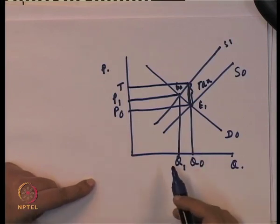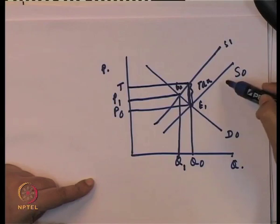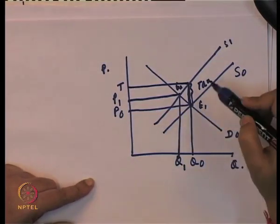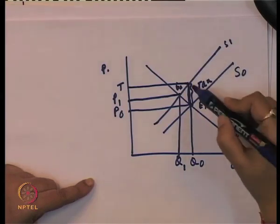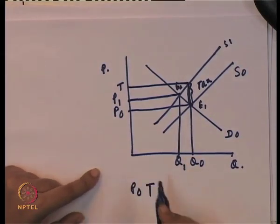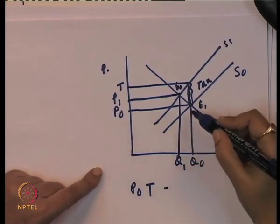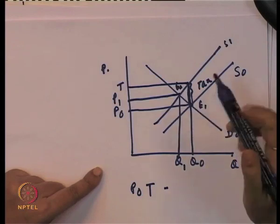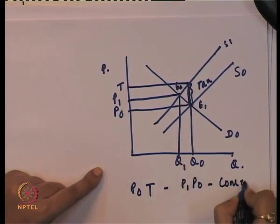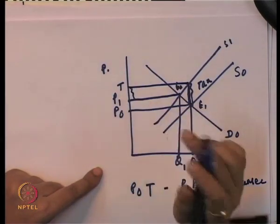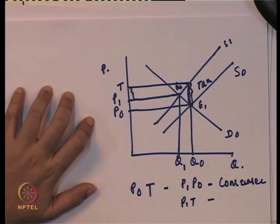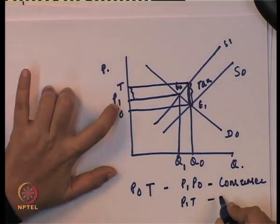Now who shares the taxes here? Initially demand curve is D0, supply curve is S0, equilibrium quantity is Q0, equilibrium price is P0. Imposition of tax leads to a shift in the supply curve from S0 to S1, and the difference between the two supply curves gives us the tax which is equal to P0T. Due to the change in supply, the producer has increased the price from P0 to P1. So P1 and P0 is paid by the consumer in terms of increase in price, and the rest of the tax amount — P1 to T — has to be paid by the supplier, because this part of the tax is not being covered by the increase in price.